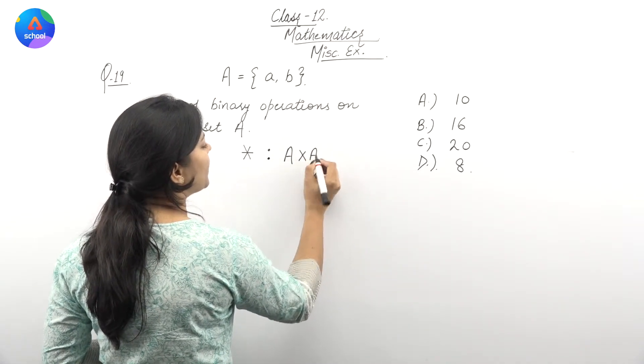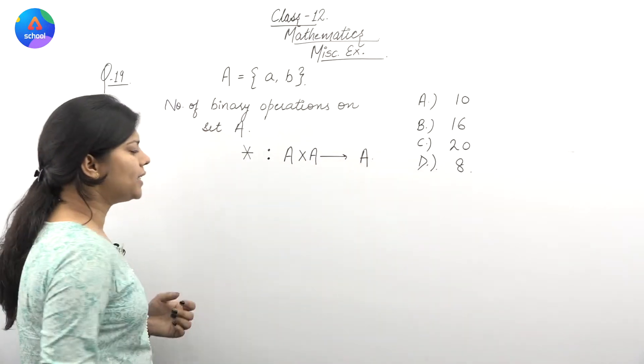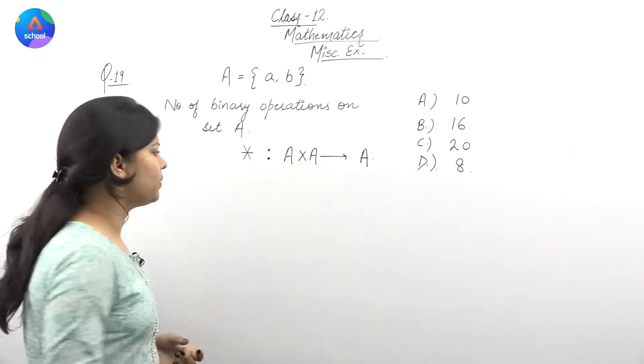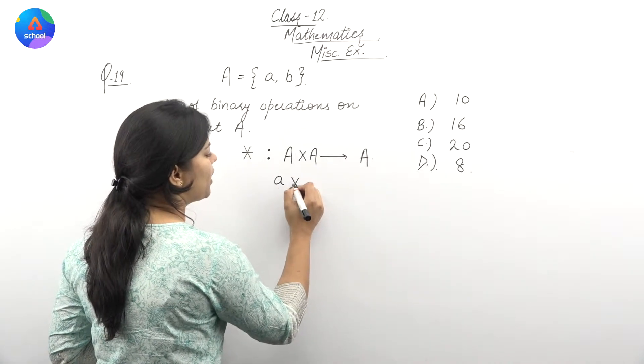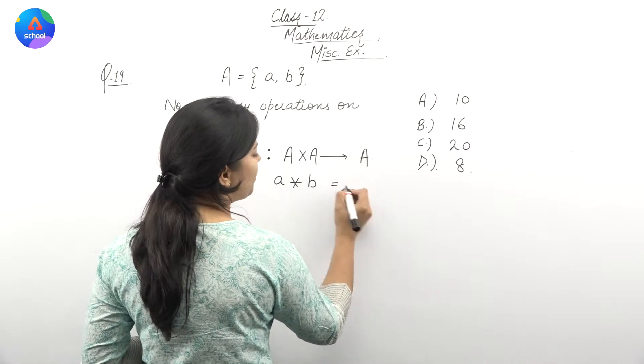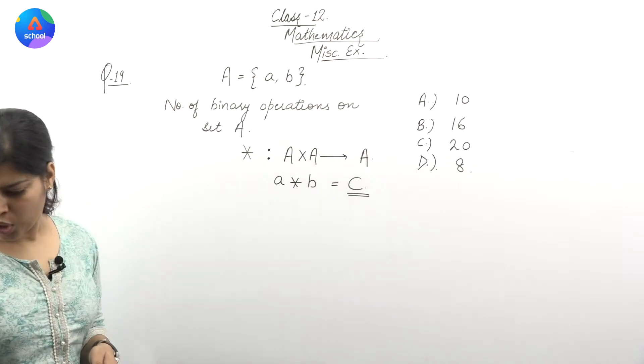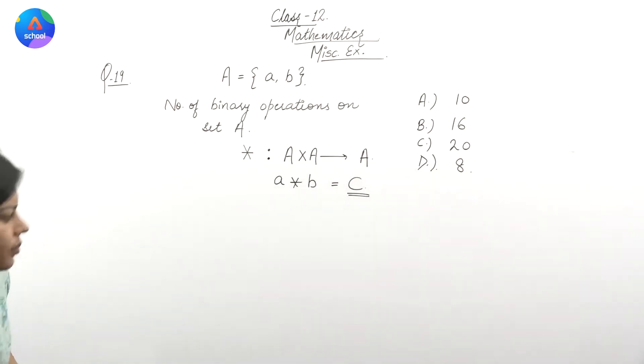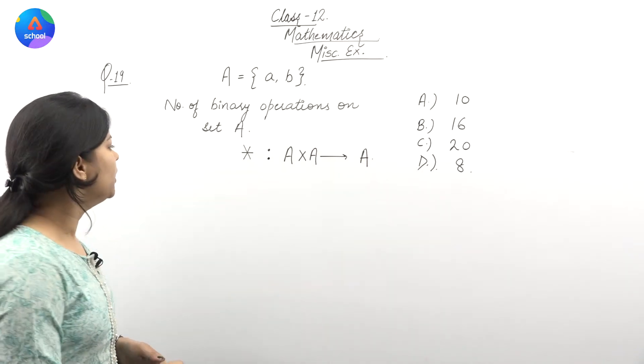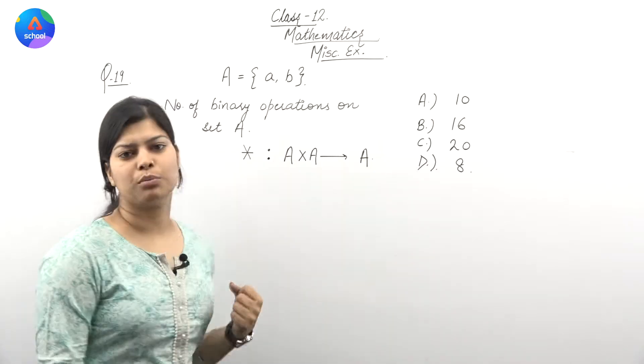A binary operation is of this type: A cross A to A. That means when we take one element from A and another element from A, and apply the star operation on them, the answer we get is some element c which belongs to set A.